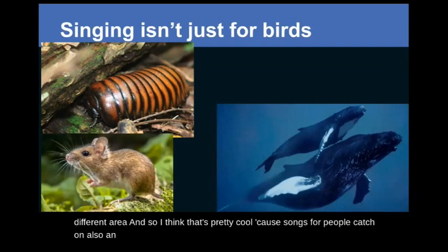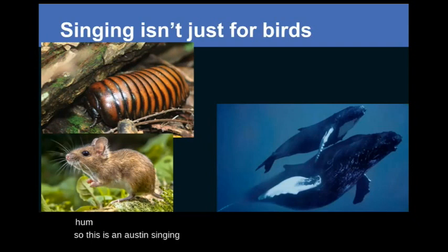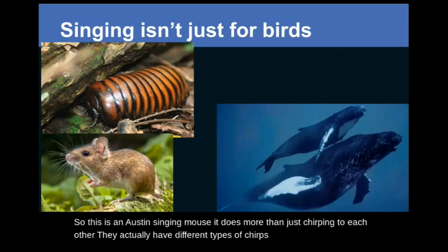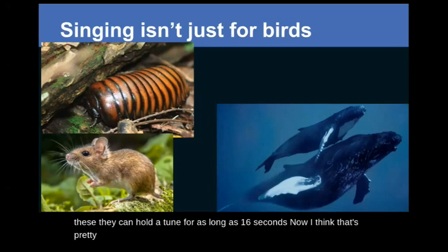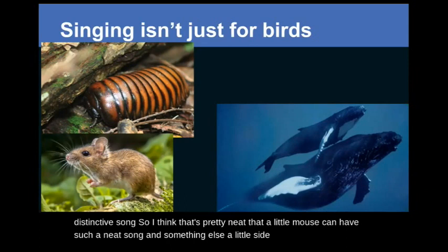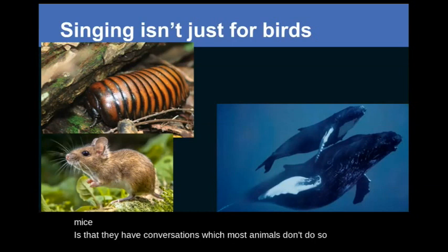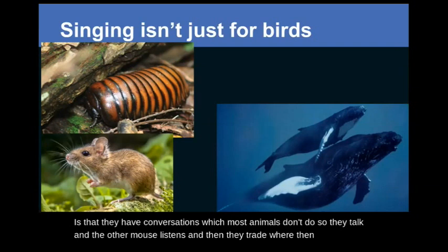This is an Alston's singing mouse. It does more than just chirping — they actually have different types of chirps: a talking-to-each-other chirp and a singing-to-each-other chirp. They can hold a tune for as long as 16 seconds, and they each have their own distinctive song. Something special about these mice is that they have conversations — they talk and the other mouse listens, then they trade. A lot of animals will talk over each other, but not these mice.